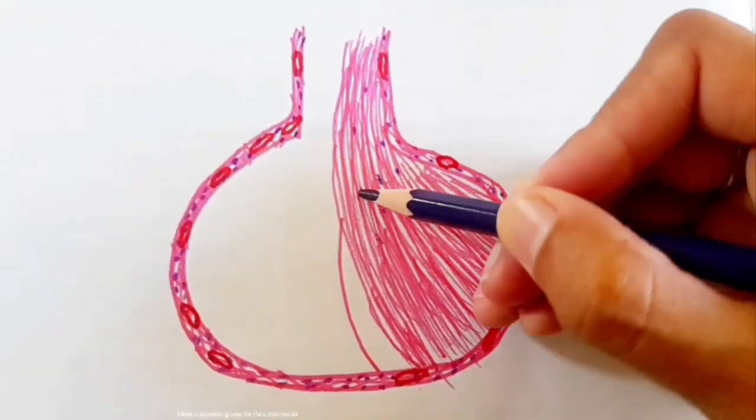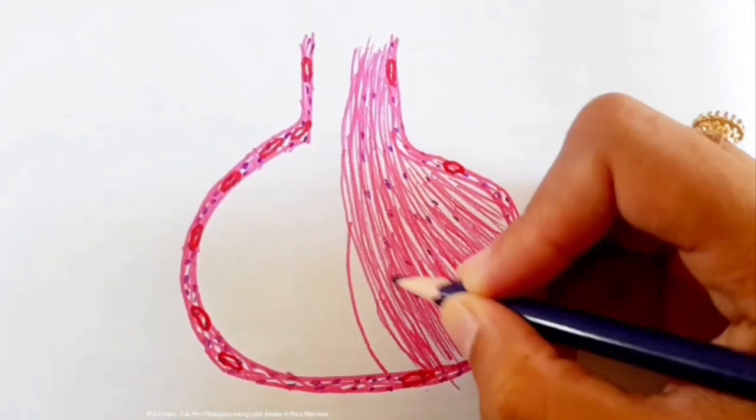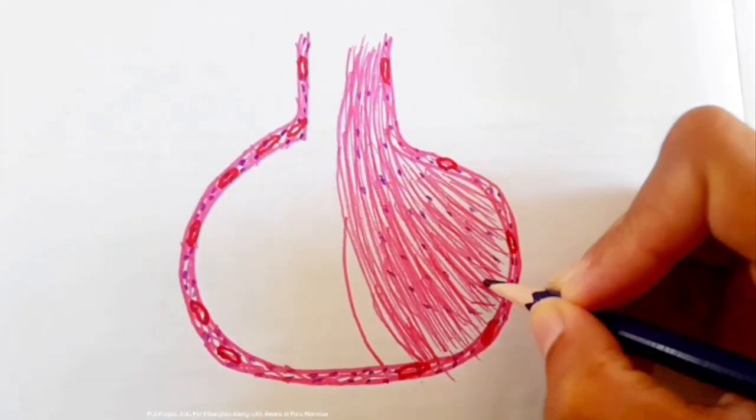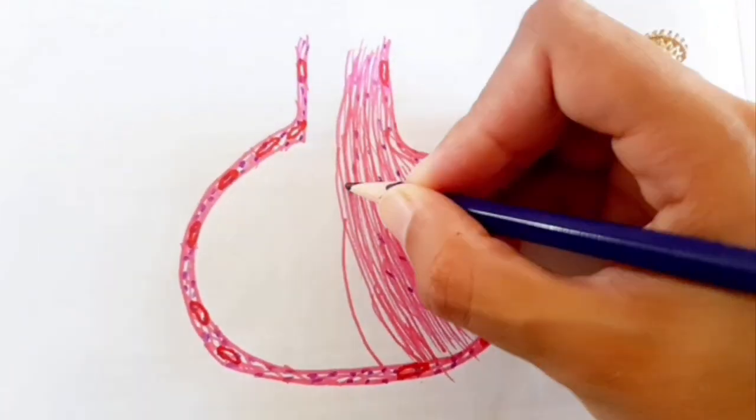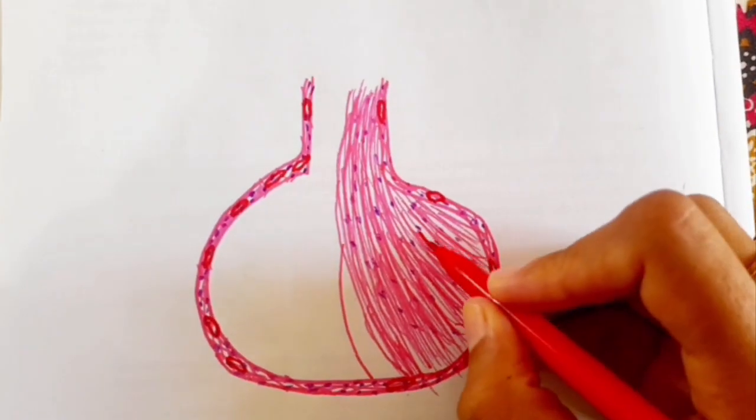Draw a separating line for pars intermedia. Put purple dots for pituitocytes along with axons in pars nervosa. Draw a few blood vessels also.